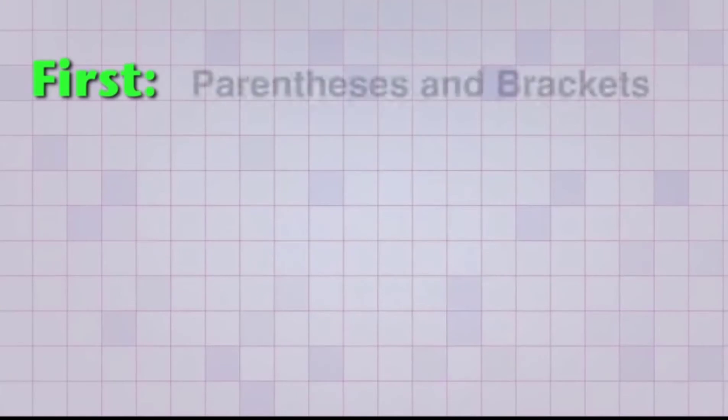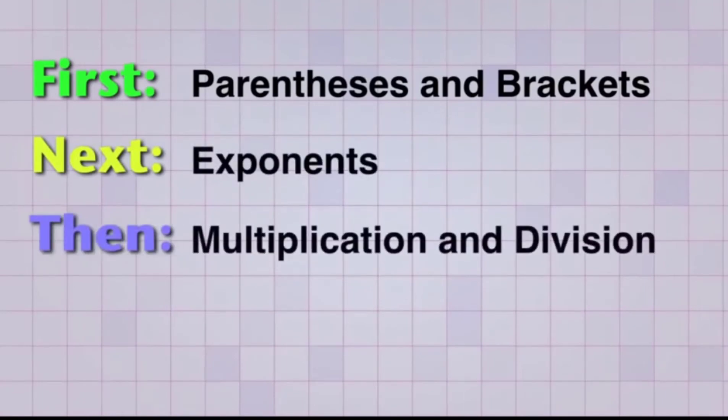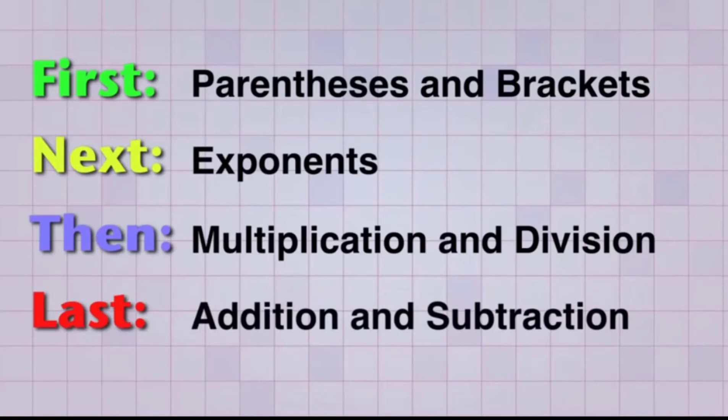This is the order of operations. First, what you want to do is you want to do what's in parentheses and brackets first. Second, you want to do exponents. Third, what you want to do is multiplication and division. Last but not least, you want to do addition and subtraction. That's it. All right, thanks for watching.